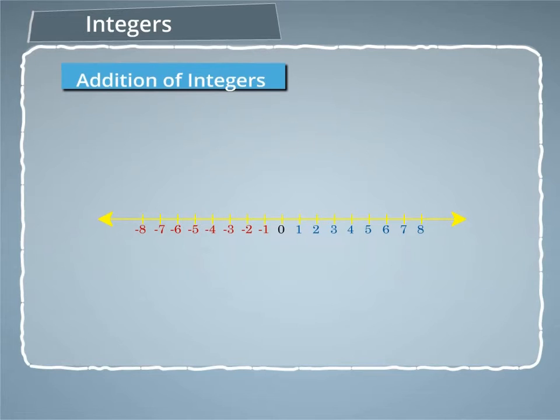For example, let's add 8 + (-5). On the number line, we start from 8 and move five steps to the left of 8. We end up at number 3. Therefore, 8 + (-5) = 3.